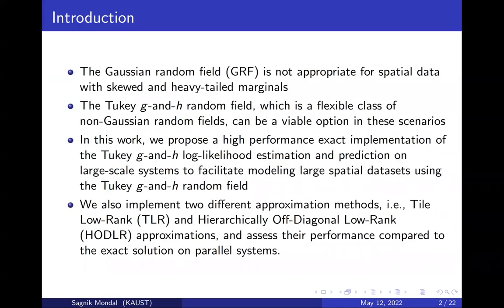The Gaussian random field is one of the most popular models used in geostatistics. However, it is not always suitable, particularly when the data shows any sort of skewness or tail thickness in the marginals. In those cases, one can use some non-Gaussian random fields like the 2KGH random field.